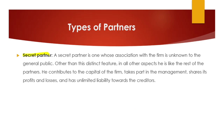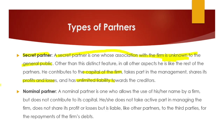Next is the secret partner. This partner exists but the general public has no information that this person is a partner of the firm — their association with the firm is unknown to the public. However, like all other partners, the secret partner contributes capital, takes part in management, shares profits and losses, and has unlimited liability. Only their identity as a partner is unknown to the general public.